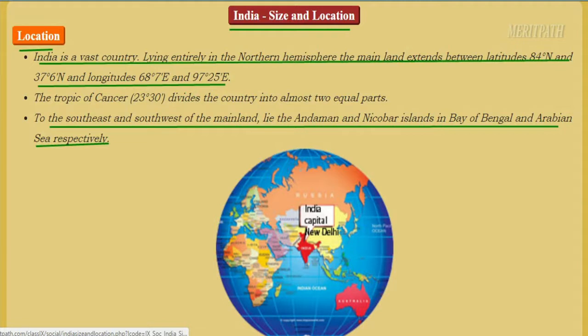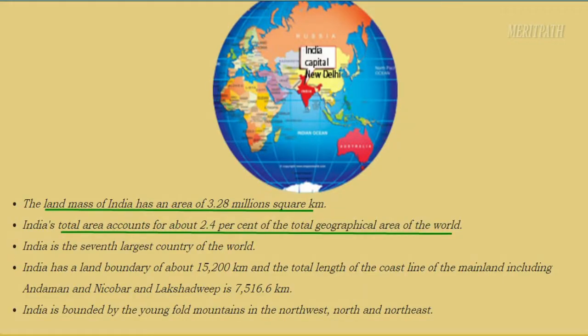This is the map of India on the total world map. The landmass of India has an area of 3.28 million square kilometers. The total area accounts for about 2.4% of the total geographical area of the world. India is the 7th largest country in the world.